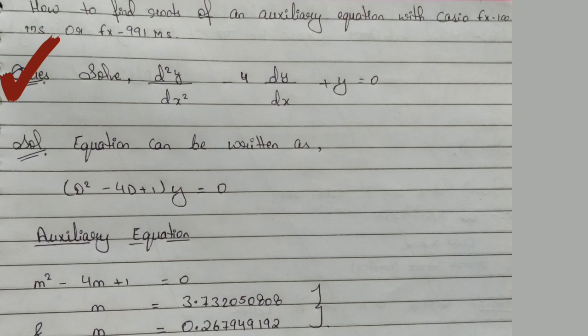Now what can we do? We can write this equation symbolically. Symbolically means in place of dy/dx we put capital D. So what will it be? (D² - 4D + 1)y = 0.